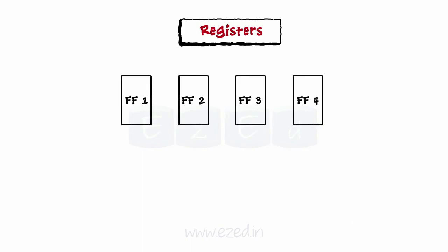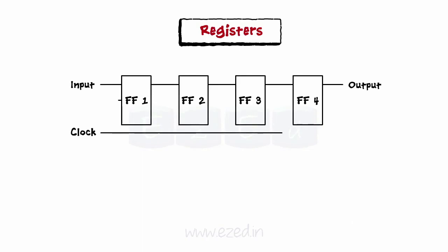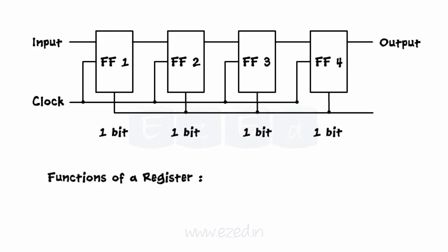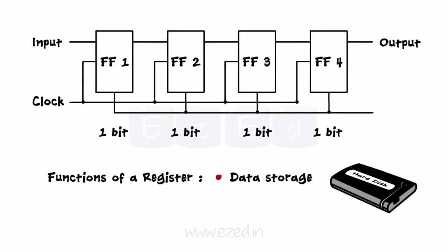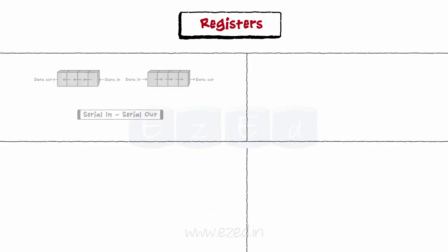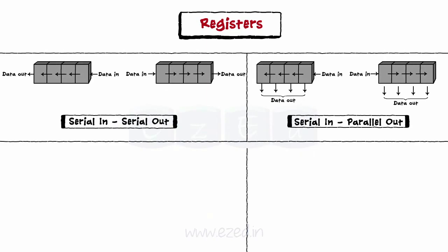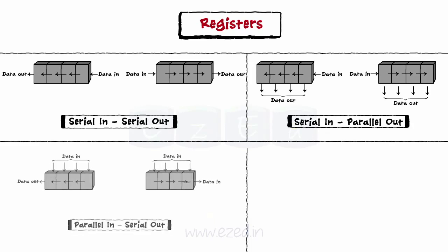Moving on to registers — a set of N flip-flops where each flip-flop stores one bit. Registers perform two basic functions: data storage and data movement. The basic types of shift registers are Serial In Serial Out, Serial In Parallel Out, Parallel In Serial Out, Parallel In Parallel Out, and bi-directional shift registers.